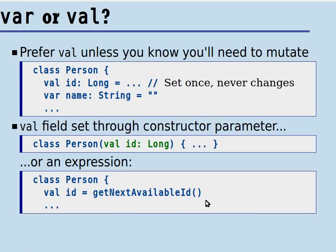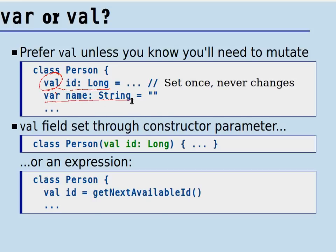That brings up the question: what about var versus val? In Scala, we prefer immutability whenever possible. The design rule is that you should use val unless you really have a good reason to mutate. For example, in a person class, the ID of a person doesn't change once assigned, so we make that a val. Whereas the name of a person might change, so we set that as a var. You can always change the getters and setters to put whatever protections you want on them.